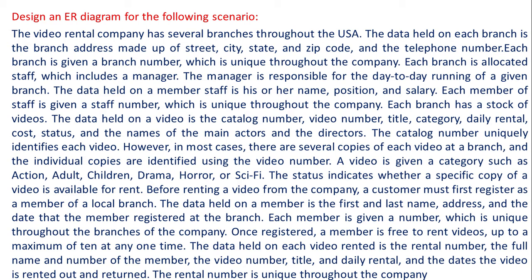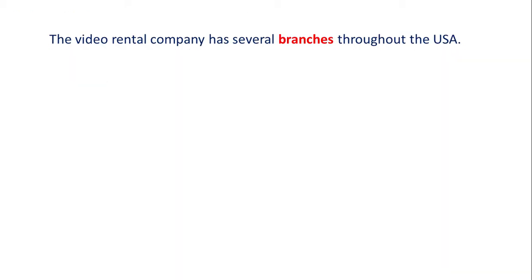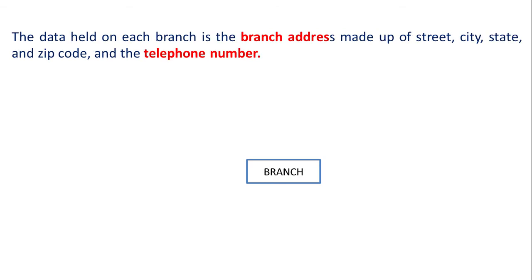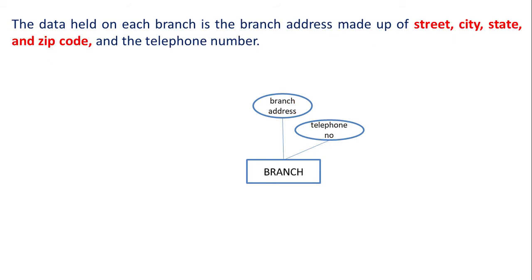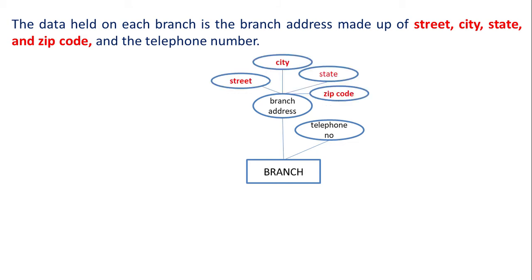The video rental company has several branches throughout the USA. As we are not storing any property of the video rental company itself, we shall not include it in our ER diagram. Branch can be taken as an entity. The data held on each branch is the branch address, made up of street, city, state, and zip code, and the telephone number. Branch address and telephone number are attributes of entity branch. Branch address is a composite attribute that can be further divided into street, city, state, and zip code.